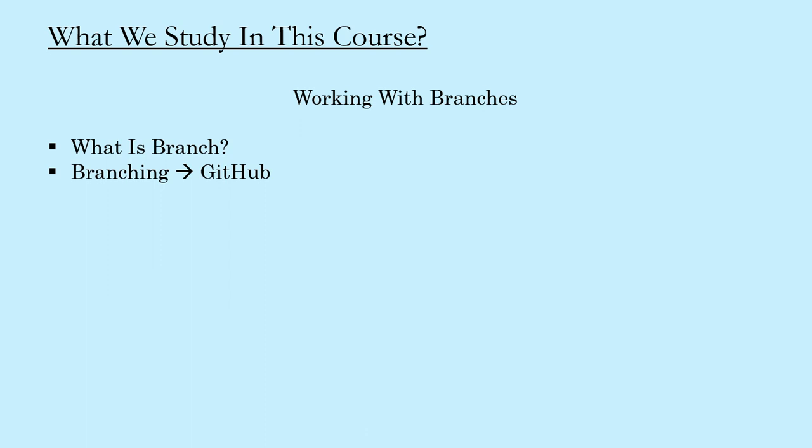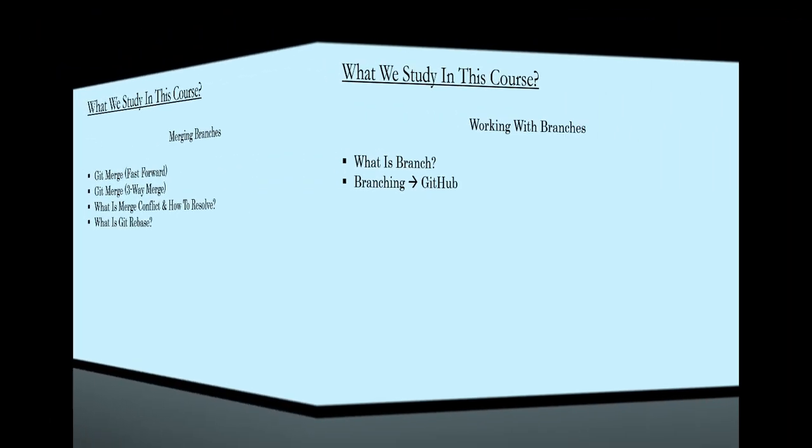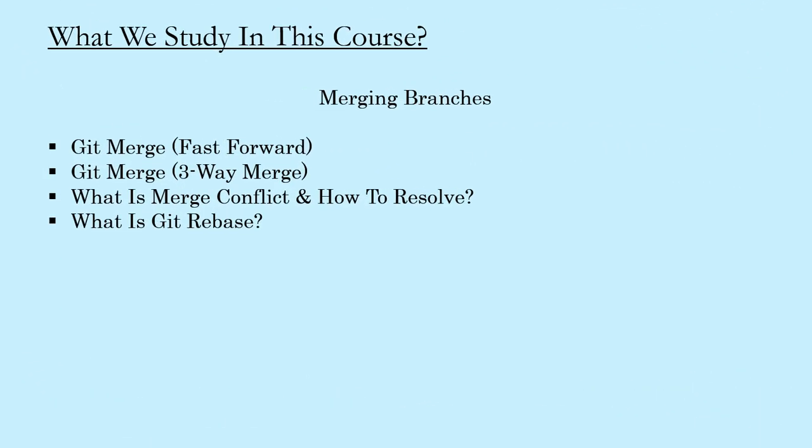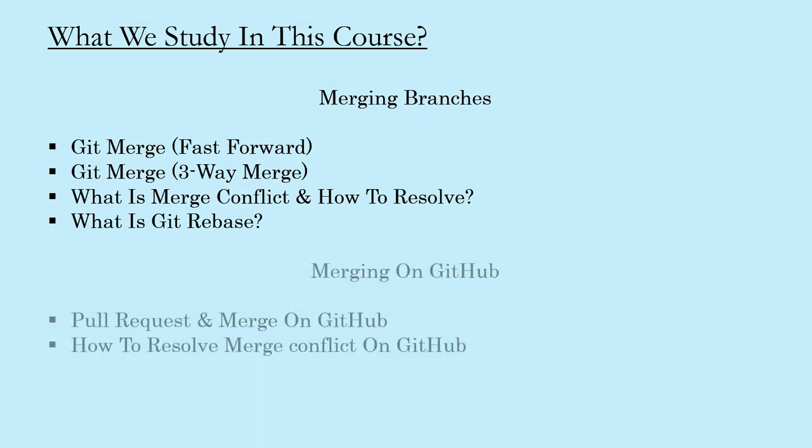After learning how to make commits with branches, we will see how to merge commits made from different branches using the different types of merge methods available on Git and GitHub. We will also see how to resolve merge conflicts arising from contributions from different branches, and finally how to rebase on Git — how to change the base point on the master or main branch commit.